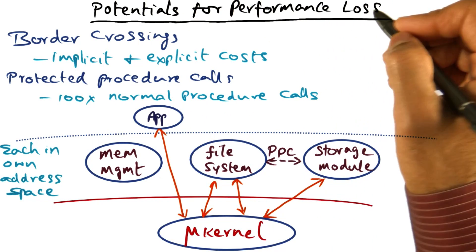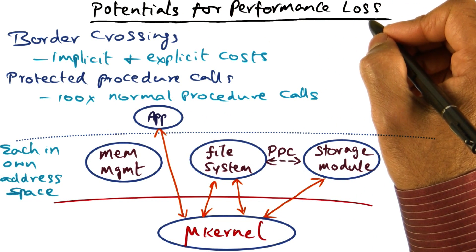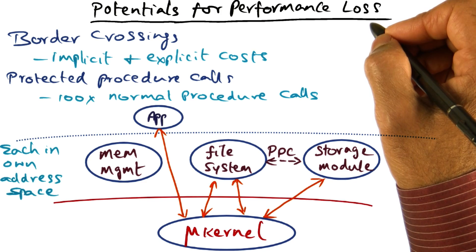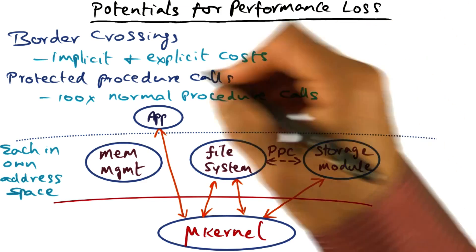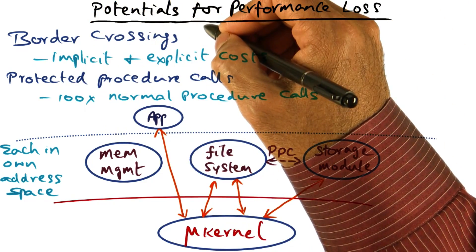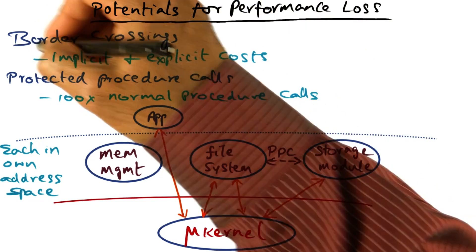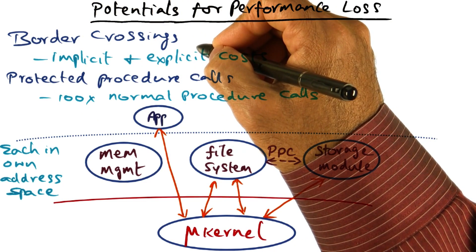What are the potentials for performance loss when you have a microkernel based operating system design? The main source of potential performance loss are what are called border crossings, as we've seen before.